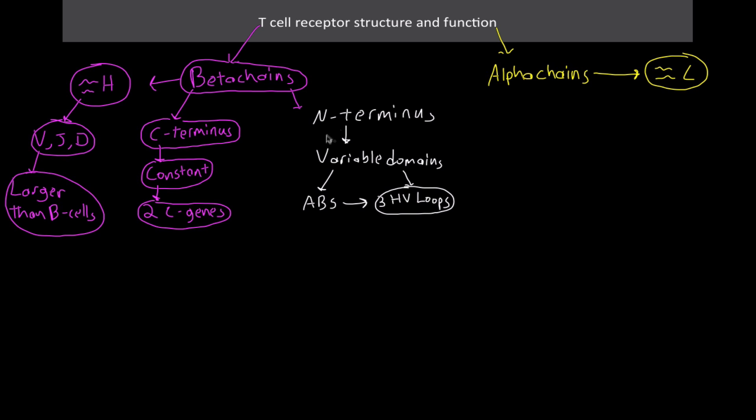In the antigen binding sites, there are the same three hypervariable loops for each and every one of these. This applies not only to the beta chains but also to the alpha chains, which is why I circled them in white. They each have their own variable domains and each have the three hypervariable loops.